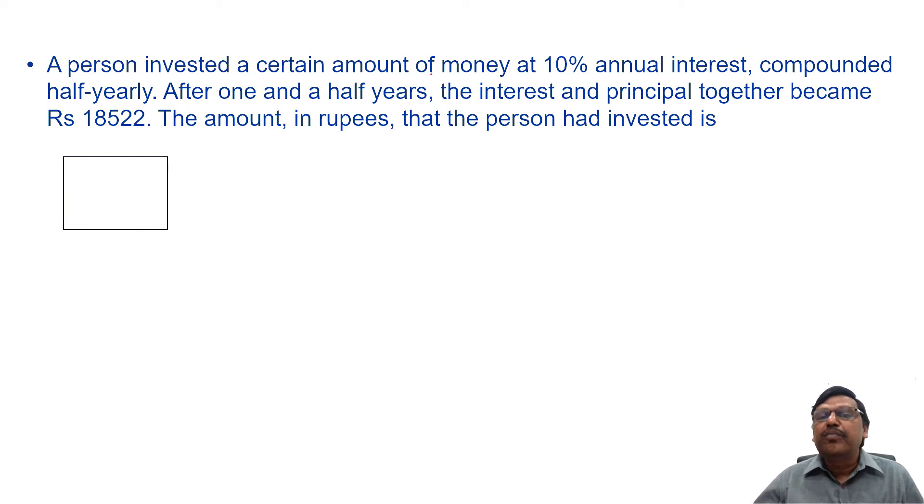A person invested a certain amount of money at 10% annual interest, compounded half yearly. After one and a half years, the interest and principal together became Rs 18,522. The amount in rupees that the person had invested is.